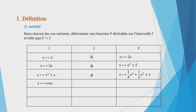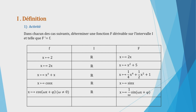Soit la fonction qui à tout x associe cos(x). C'est une fonction trigonométrique, définie sur tout ℝ. La fonction grand F qui à tout x associe sin(x) est dérivable sur tout ℝ et sa dérivée égale cos(x). Plus généralement, la fonction qui à tout x associe cos(ωx + φ), avec ω et φ deux réels et ω ≠ 0, est définie sur tout ℝ. La fonction grand F qui à tout x associe (1/ω)sin(ωx + φ) est dérivable sur tout ℝ et sa dérivée égale petit f.